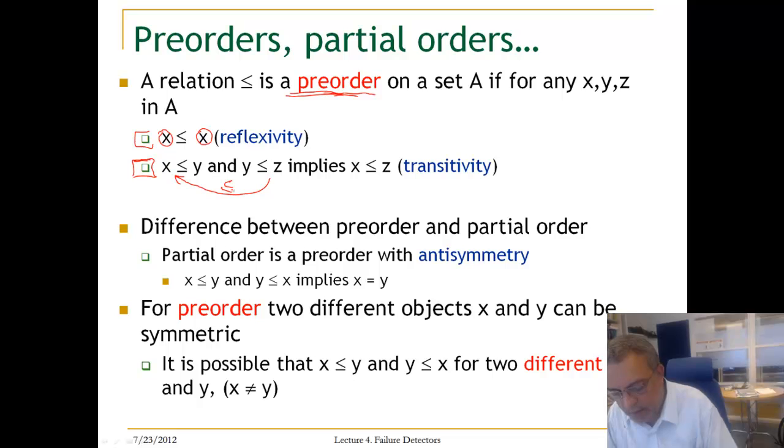Okay, the relation holds here. The difference between pre-order and partial order is that partial order is a pre-order with anti-symmetry, which means that if X is before Y in the partial order and Y is before X in the partial order, then it implies that X and Y are the same. This requirement, which is called anti-symmetry, is not required to be part of a definition of a pre-order.